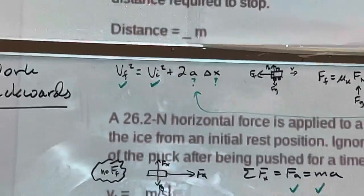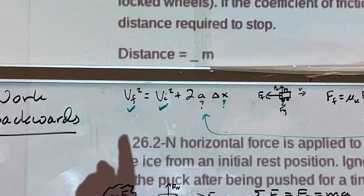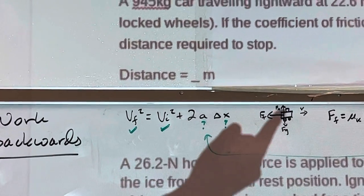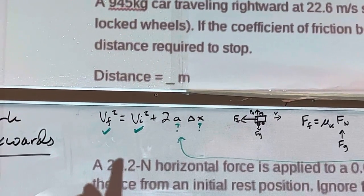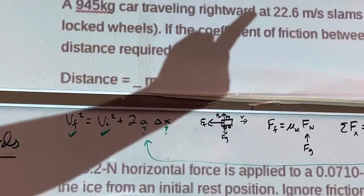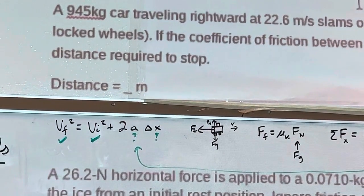Right there. So let's think about that a little bit. There it is. If we think about it, we know the final velocity. The car stops. The initial velocity, we also know. There it is right there, 22.6 meters per second.